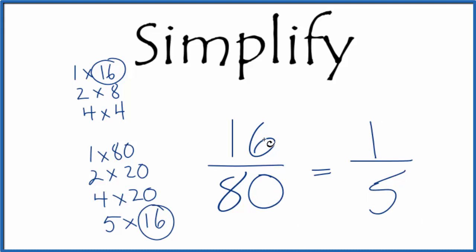A final way is you could divide 16 by 2 and 80 by 2 and see what you get. That might be easier to work with. Either way, when we simplify the fraction 16 over 80, we get 1 5th.